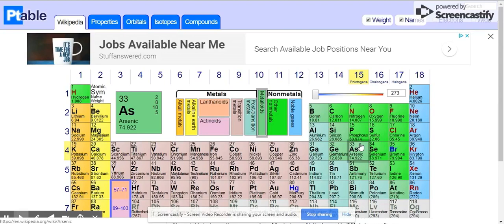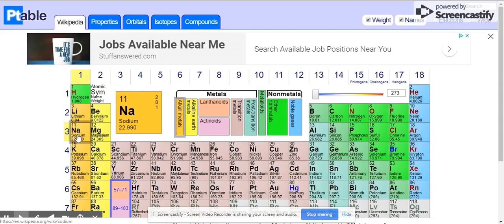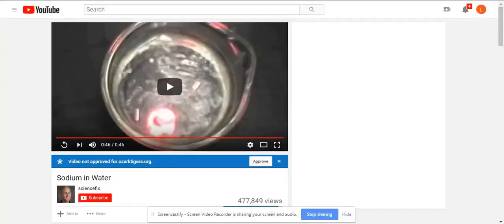A really good example of a reactive element is sodium. Sodium's here. It's in group one, period three. Basically, based on its arrangement of electrons, it has a lack of valence electrons. Let me show you exactly how reactive it is.